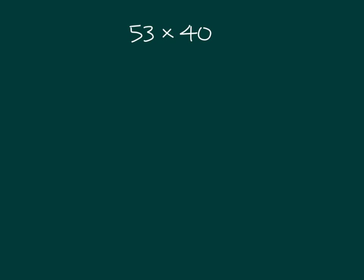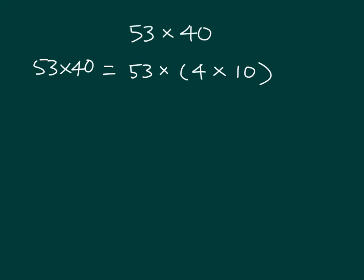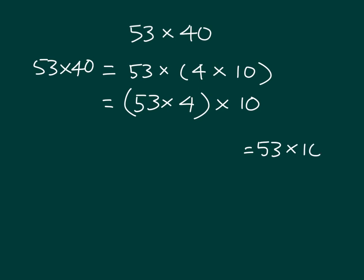Let's try one last problem. Here we have 53 times 40. We're going to break apart the number that can be multiplied by 10, which is 40. So 53 times 40 equals 53 times 4 times 10. Let's rearrange this so that we then have 53 times 4, and then multiply by 10. Another way we could write this is 53 times 10 and then times 4. Let's look at it both ways using place value charts to see if we get the same answer.